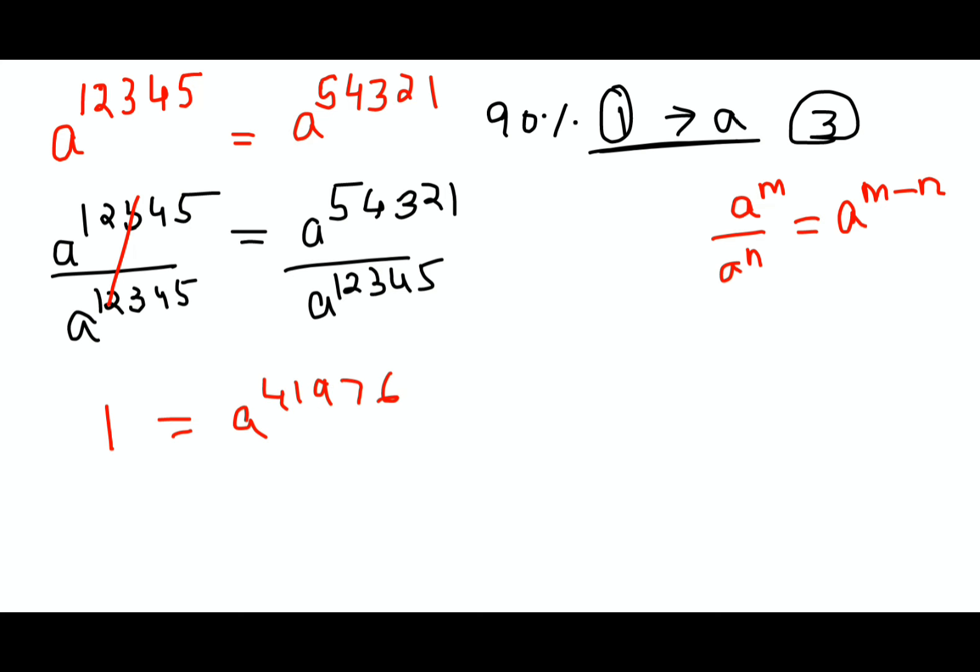Now understand, since the exponent is an even number - the last digit is 6, which is even - the entire exponent is even. When you take the 41976th root on both sides, the value of A comes out to be plus or minus 1.